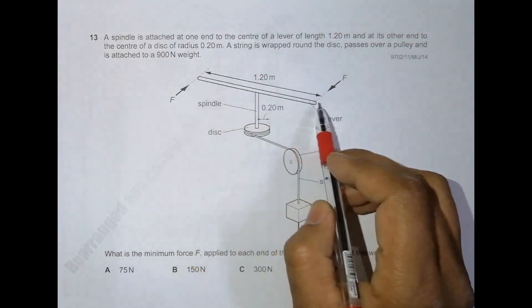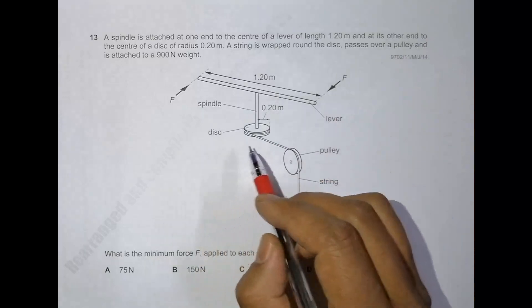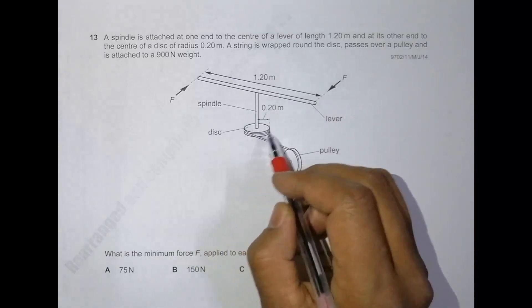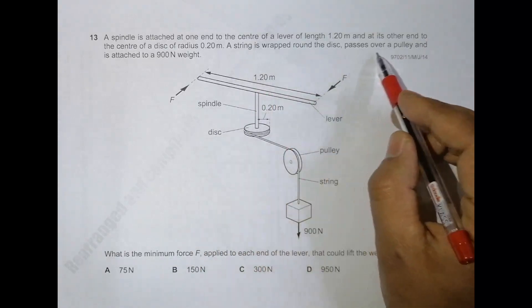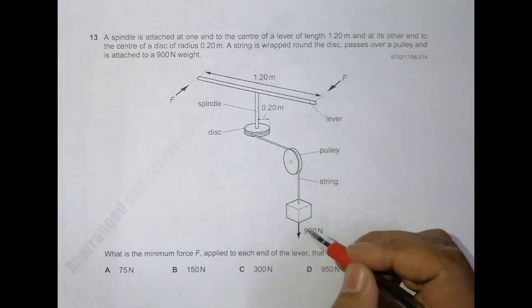This is the lever of 1.2 meters. At its other end is the center of a disk whose radius is 0.2 meters. A string is wrapped around the disk, passes over a pulley.